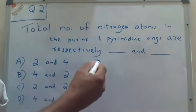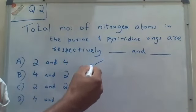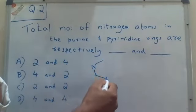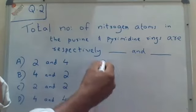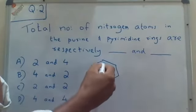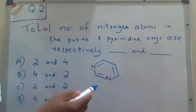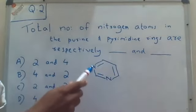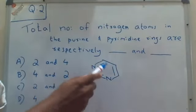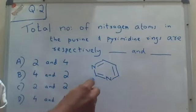First of all, let me draw the structure of pyrimidine. So this is a six-membered ring with two nitrogen atoms at the alternative positions, and this is called as pyrimidine.